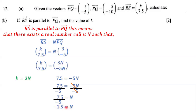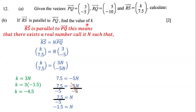Now we know N is negative 1.5, so we can find K. Since the first components must be equal, K equals 3 times N, which is 3 times negative 1.5, giving us negative 4.5. Therefore K is equal to negative 4.5 — that is the answer.